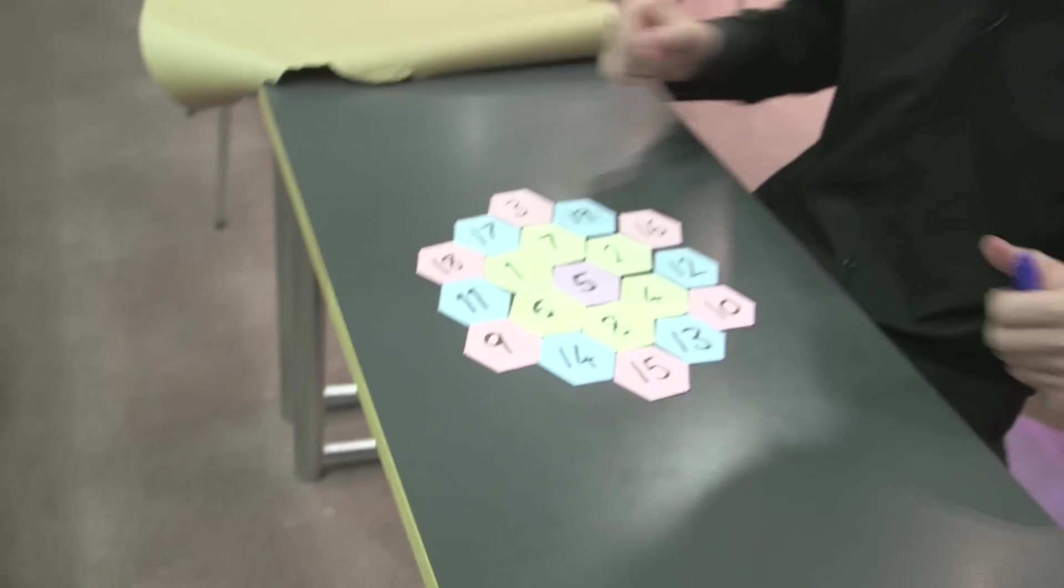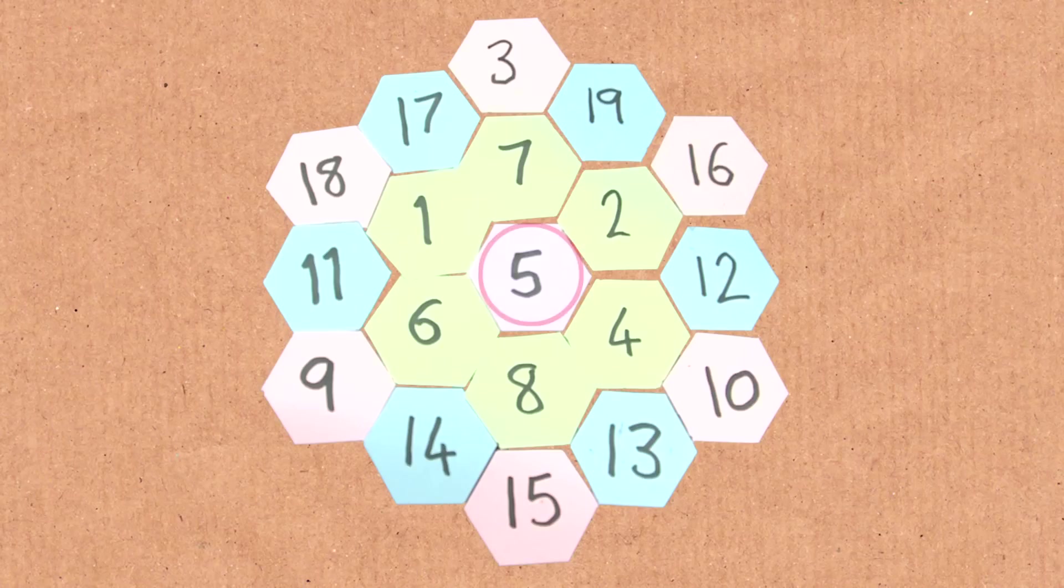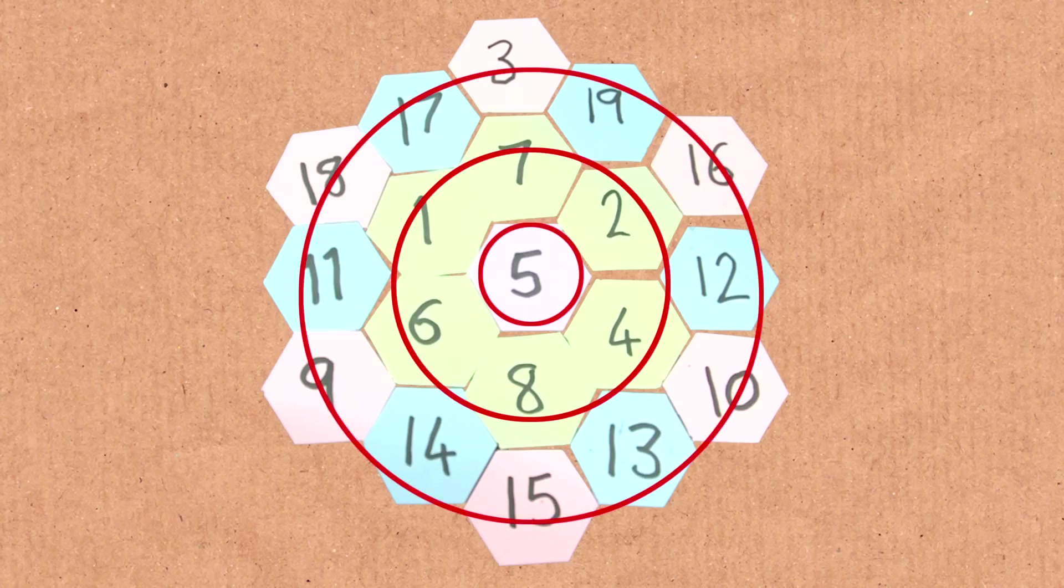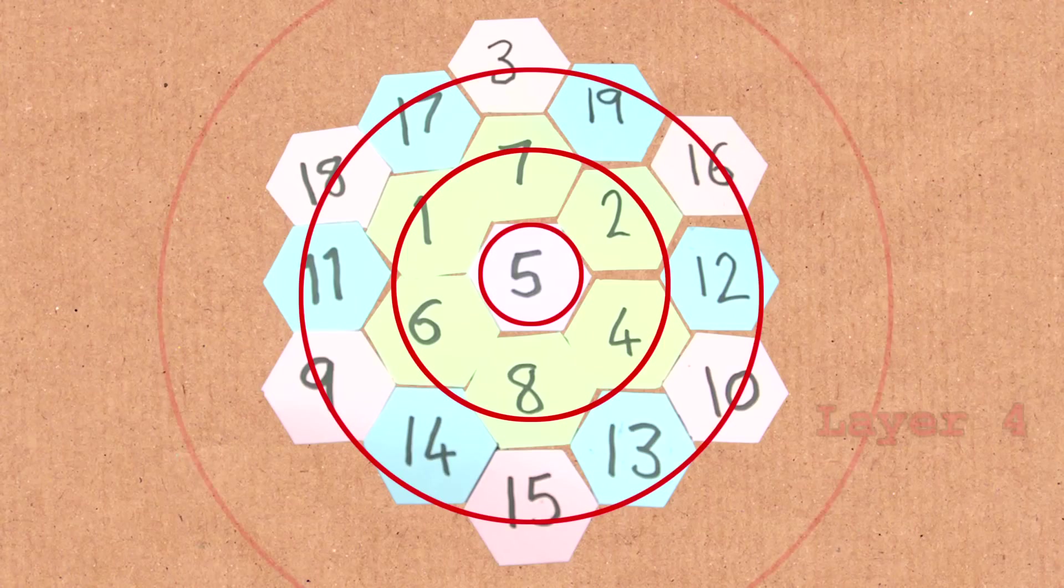So magic squares, there are many types of magic squares, but this is the only magic hexagon. You can rotate it and reflect it, but apart from that, it is unique. We could do a bigger size. This has size 3, so we've got three layers. We could try and get a magic hexagon of size 4, size 5, or something else. They don't exist. This is the only magic hexagon. It is unique. It is special.